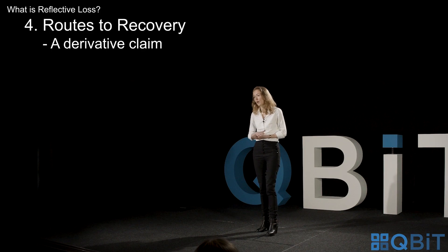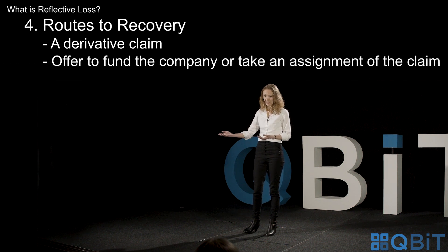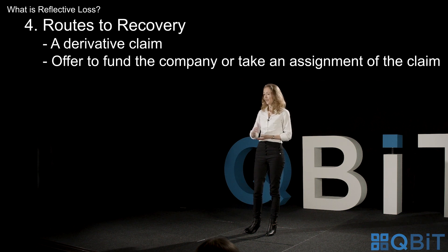The potential upside with a derivative claim is that if you can persuade a court that you have the right to bring the claim, the court will often make an order that the company pays the costs of the claim rather than the shareholder. Another potential issue is where the wrongdoer has done something so bad to the company that the company hasn't got the means to bring the claim — it's been asset stripped or left insolvent. In that case you might want to consider offering to fund the company to bring the claim, or taking an assignment of the claim from the company so you can bring it yourself in the name of the company.